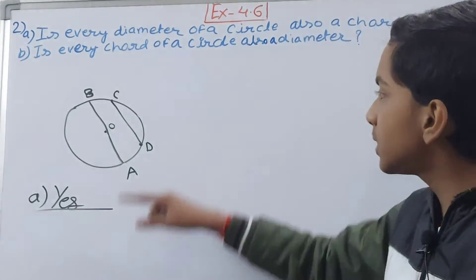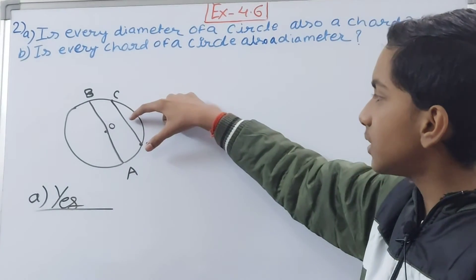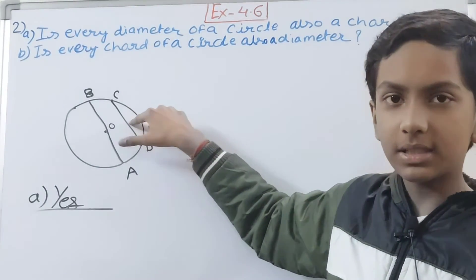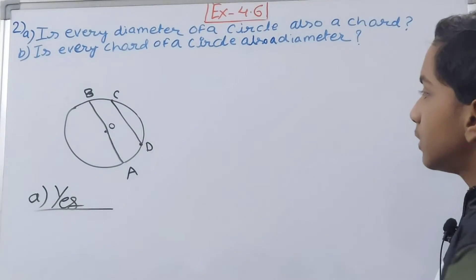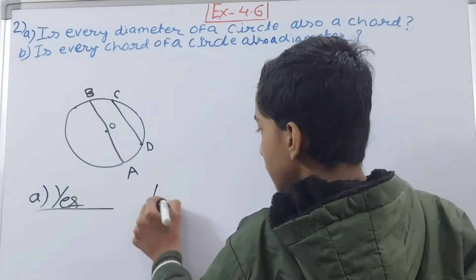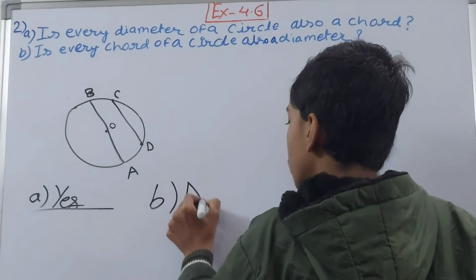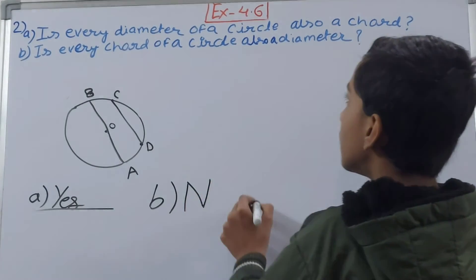No, a diameter has to pass through the center of the circle. But here it is not passing through the center of your circle. So that means answer to the part B is no, not every chord of a circle is the diameter of a circle.